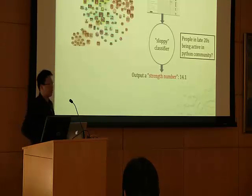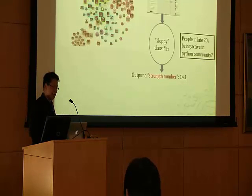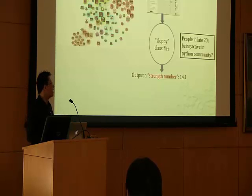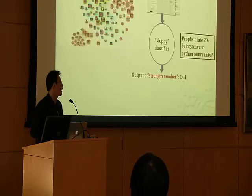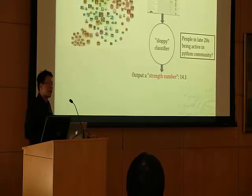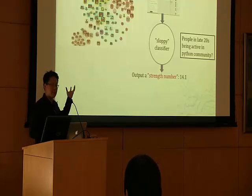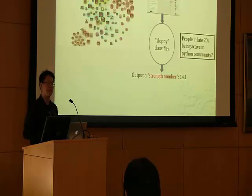Here is a more concrete example to help you understand the problem domain. Imagine you are Facebook and you want to help a local bookstore promote Python programming language books. The community you are interested in is the set of all people probably in their late 20s, residing locally, who are interested in Python programming. Facebook can build a sloppy classifier and run it through all the users. By reading user profiles, the classifier outputs a number indicating the likelihood that the user belongs to this community.